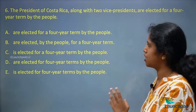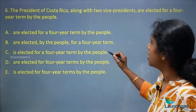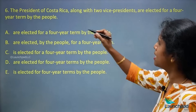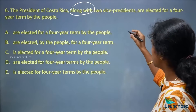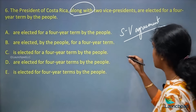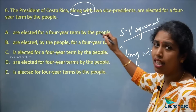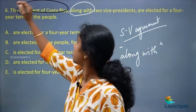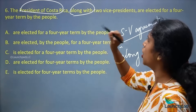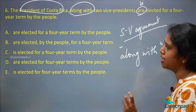Next: 'The president of Costa Rica along with two vice presidents are elected for a four-year term by the people.' You have four sentence options. The clue here is 'along with.' According to subject-verb agreement, whenever you have 'along with,' the verb agrees with the subject. The subject 'the president' is singular, so the verb should be singular too: 'The president of Costa Rica along with two vice presidents is elected for a four-year term by the people.'